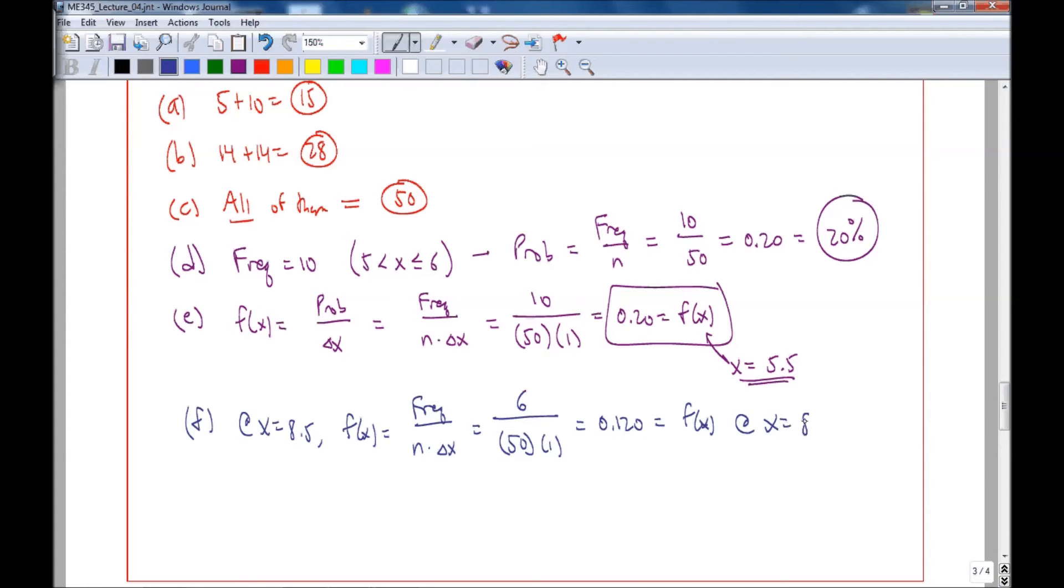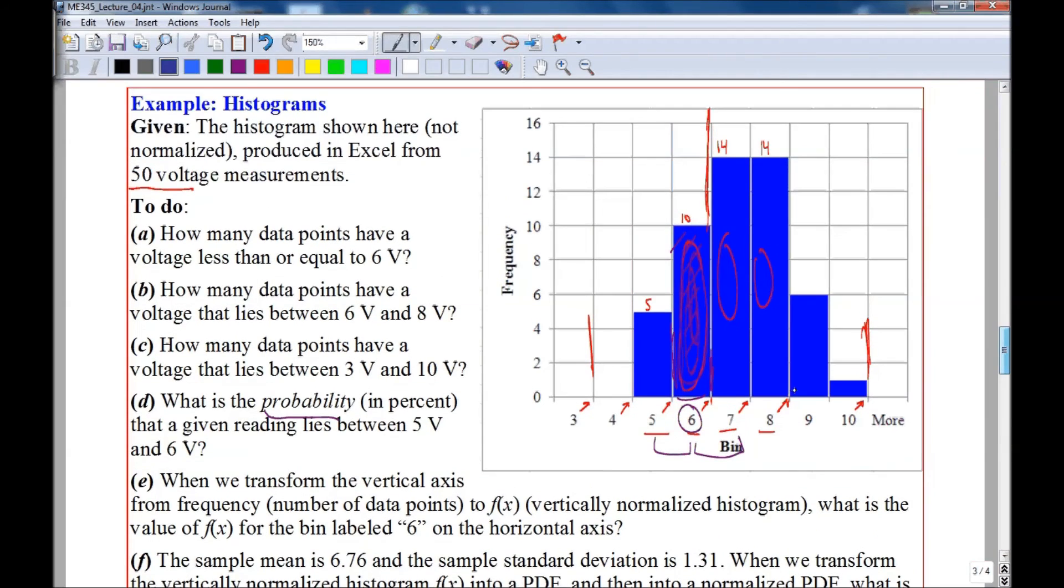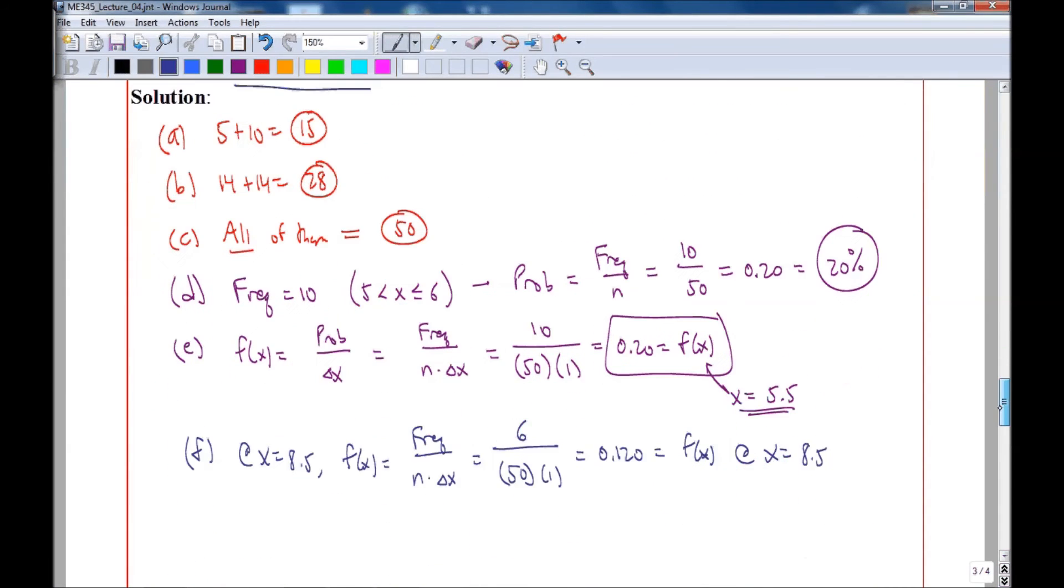So we're talking about this bin here between 8 and 9, which has 6 data points, and 8.5 is the halfway mid value of those two extremes.